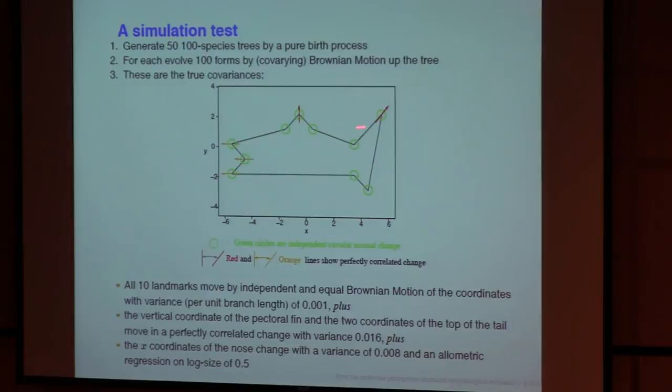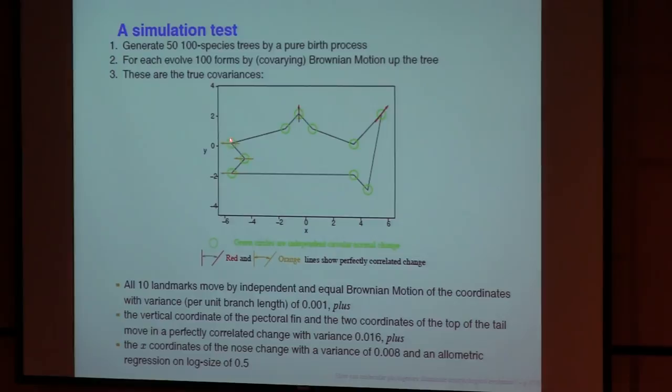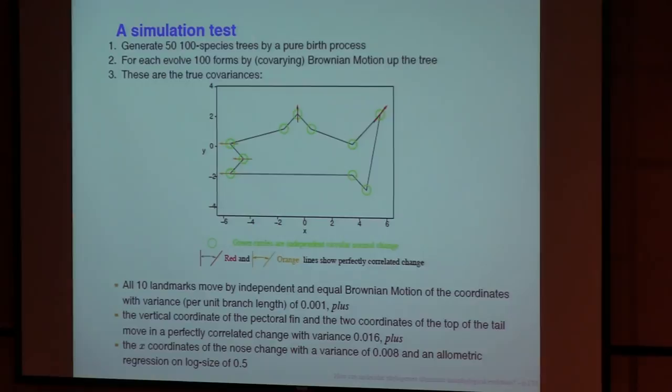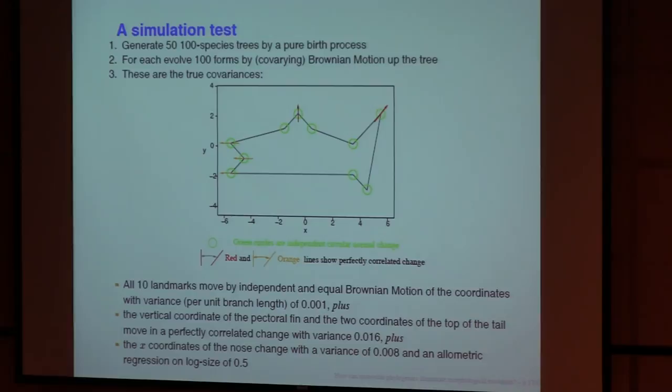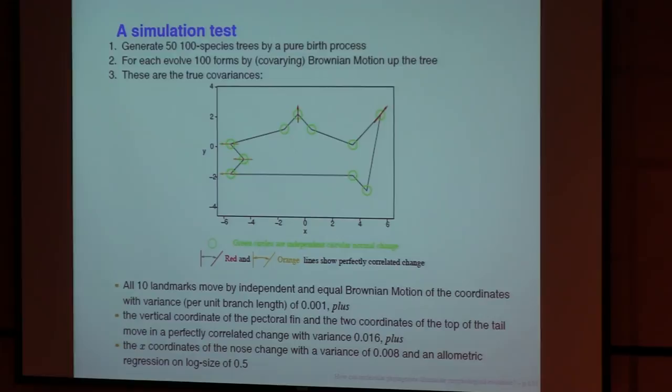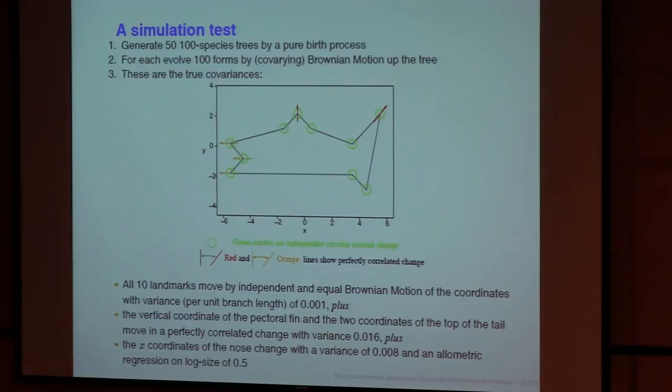One will be to have the top of the fin go up and the top of this fin go out at a 45 degree angle in a perfectly correlated way. The second will be to have the nose, the three coordinate, the x-coordinates of the nose, go forward in a perfectly, in an independent, perfectly correlated way. And there is also, the size is also changing, and we're having the nose, in this particular simulation, the nose movements are correlated with size. I won't go over these are the parameters, but I'll just show you the result.